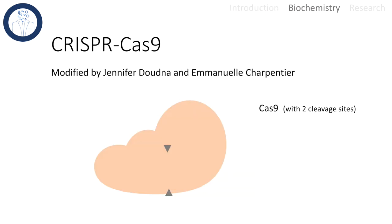This system was modified by Jennifer Doudna and Emmanuelle Charpentier by creating a powerful method for gene editing — probably one of the biggest milestones since the reveal of the double helix. But how is this modified version of CRISPR-Cas9 designed?